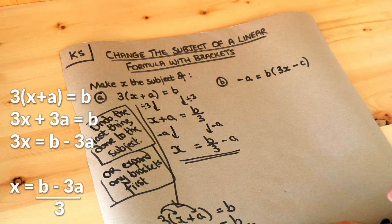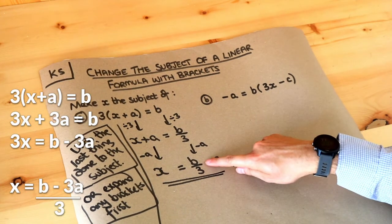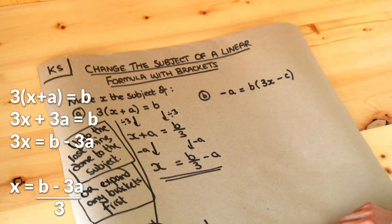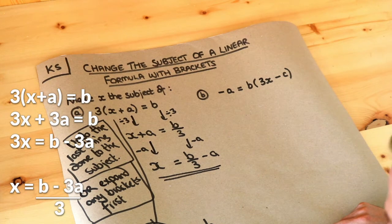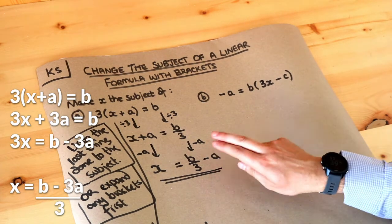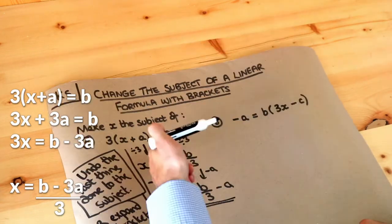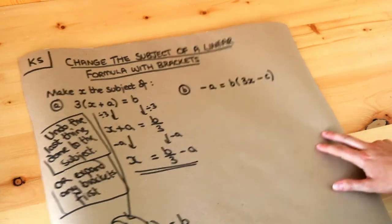Now you might be wondering: is this the same as the first answer? And the answer is yes. If I split this fraction up — b minus 3a, each of those things divided by 3 — it'd be b over 3 minus 3a over 3, which is the same as b over 3 minus a. So they're actually the same answer, and you can just choose whichever of these two methods you find more comfortable.